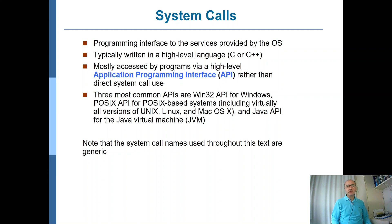Let's look at the details of system calls. System calls constitute the programming interface for the system services provided by the operating system. They are typically developed using a high-level programming language — the typical choice being C or C++ — because these languages are easy to program with, yet generate very efficient, lightweight code, while still allowing low-level details needed when developing system services.